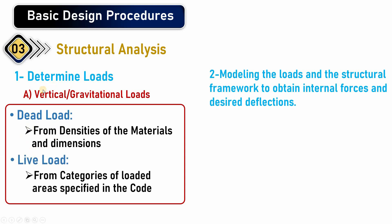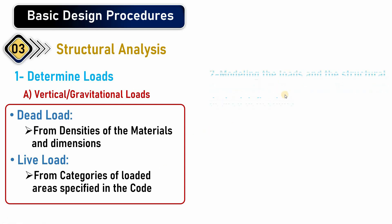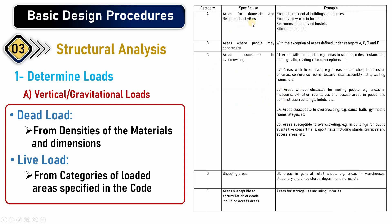Live loads are also part of the gravitational loads — they act downward. Live loads are calculated from the code depending on the function of the loaded areas. For example, Category A covers areas for domestic and residential activities such as rooms in residential buildings, bedrooms in hotels, kitchens, and toilets. You simply go to the appropriate table in the code and take the live load value for that category.